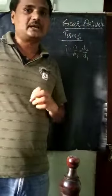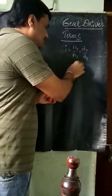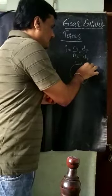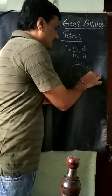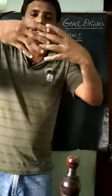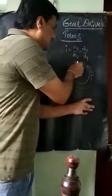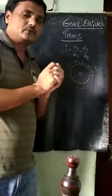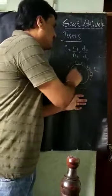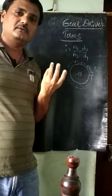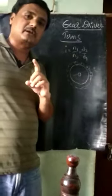This is called the pitch circle diameter. The gears have teeth with peaks, and if we draw a line through the middle of the teeth — because teeth engage at their middle — the circle passing through that midpoint is called the pitch circle. That pitch circle has a diameter called the pitch circle diameter. D1 means pitch circle diameter of the driver, and D2 means pitch circle diameter of the follower.